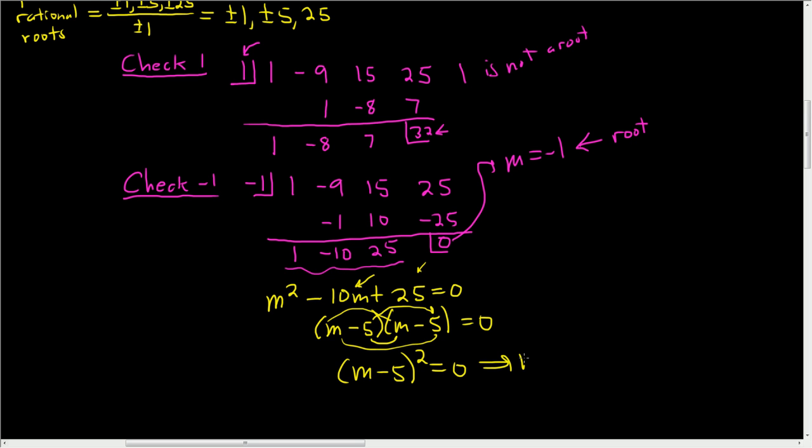So that tells us that m equals 5 is a root of multiplicity 2, right? Because it appears twice. We have m minus 5, m minus 5. So we have two roots, m equals negative 1, it's a root of multiplicity 1, and m equals 5 is a root of multiplicity 2.